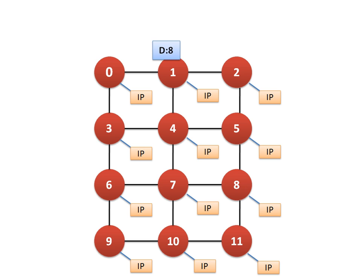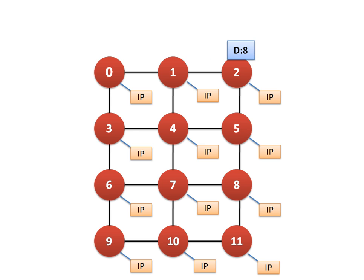So this packet will be sent in the X direction to node 1. Now node 1 also performs the same calculation — whether node 8 lies in the same column or not. No. It will calculate the column of the destination and compare that column with its own. It finds that the destination column is bigger than its own, so node 8 must be on the right side. So it will forward the packet to its right neighbor.